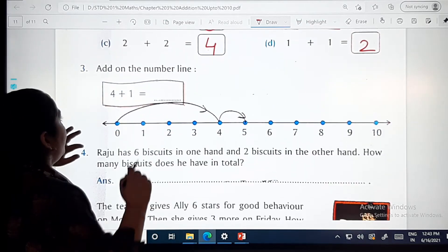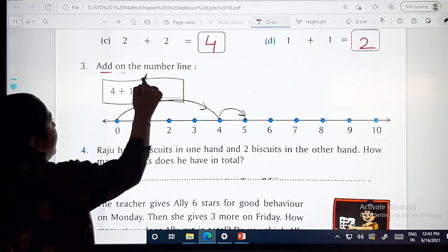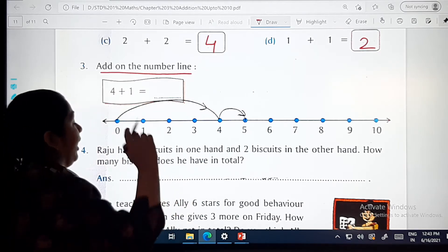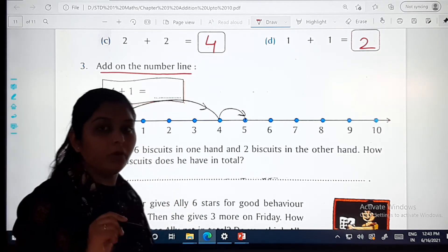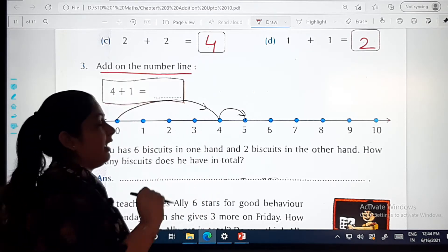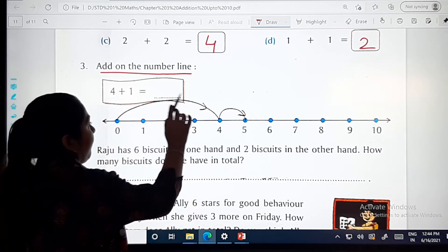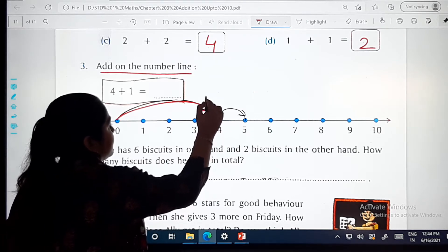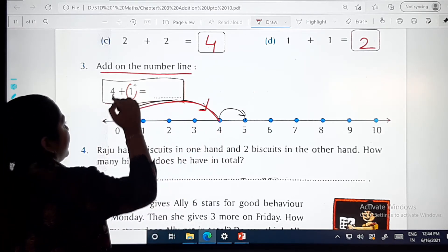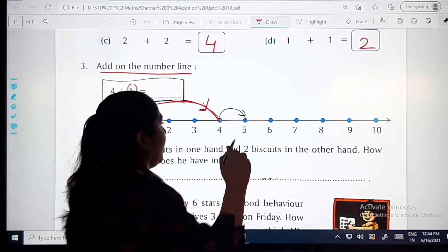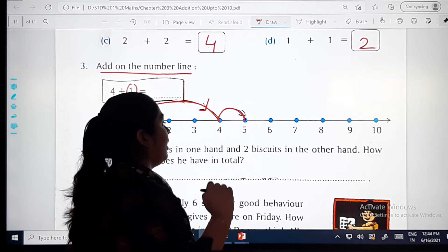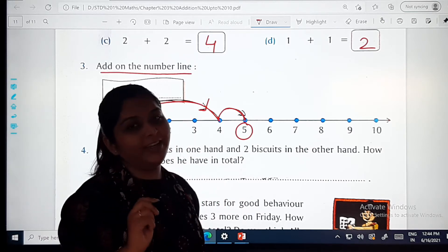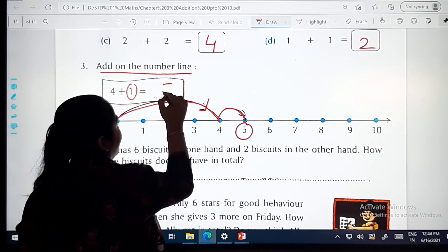Next, what you have to do? Add on the number line. Read it along with me. Number line peh hum ko addition karna hai. That is four plus one. Toh hum zero se four tak ki ek arrow banayenge. Ma'am ne banai hai, from zero to four, like this. And then hum ko us mein kya add karna hai? Hum ko one add karna hai. So hum ek aur arrow banayenge aise. Phir hum kaunse number peh paunche hai dekho? Hum paunche hai number five peh. So number five will be your answer.